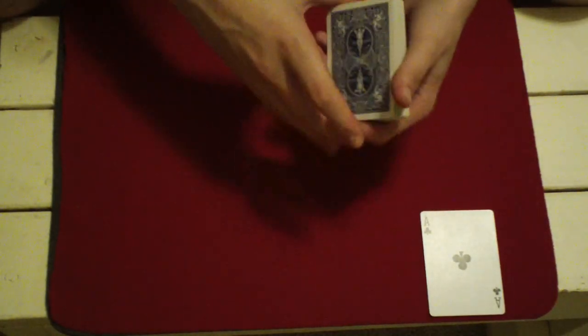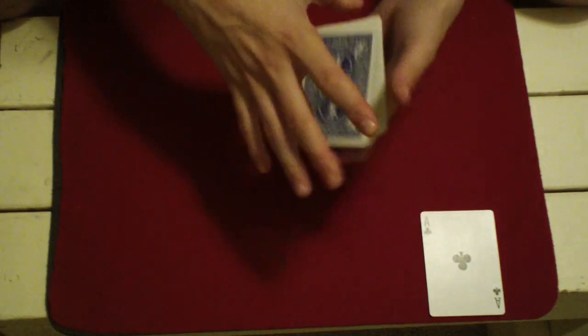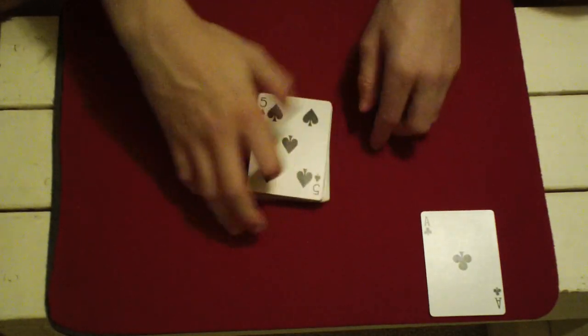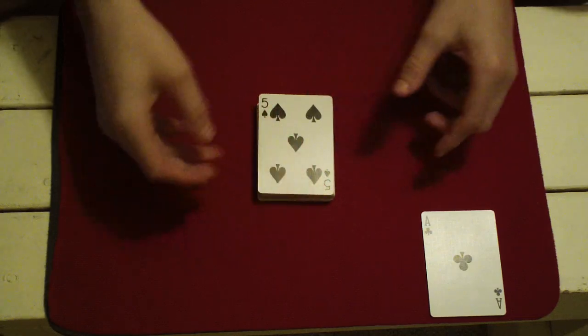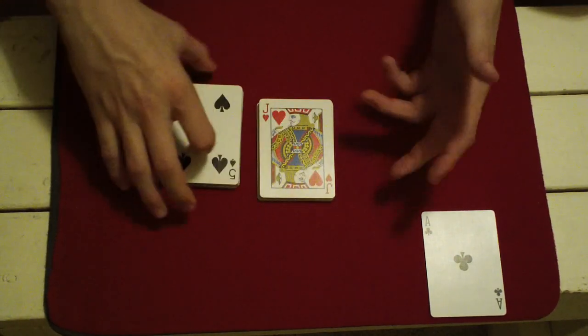Now we're one fourth of the way there. We still have a pretty long way to go. And the next way we're going to find the second ace is that the spectator cuts the deck roughly in half. So say they cut right there.